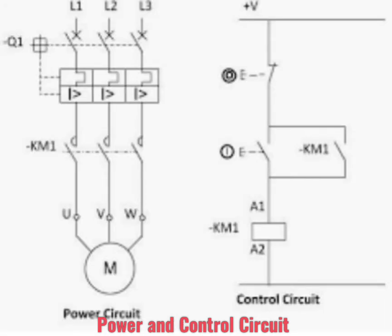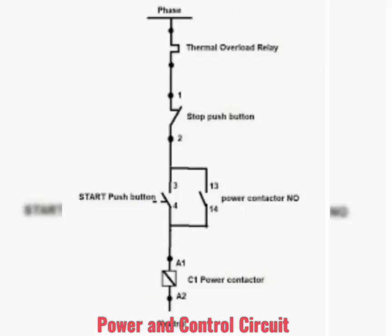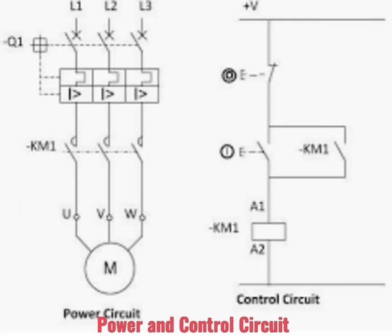In the NO point we have to provide one sealing contact at the contactor NO point. While breaking the control circuit of the main contactor, the motor will turn off. If we need more control, we can provide one more limit switch or whatever controls we need.